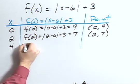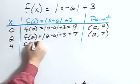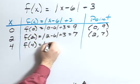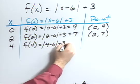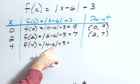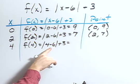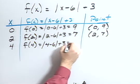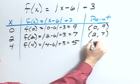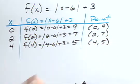And if I chose 4, f of 4 would be the absolute value of 4 minus 6 plus 3. 4 minus 6 is negative 2. The absolute value of negative 2 is 2. 2 plus 3 is going to be 5. So I'd have the point 4, 5.